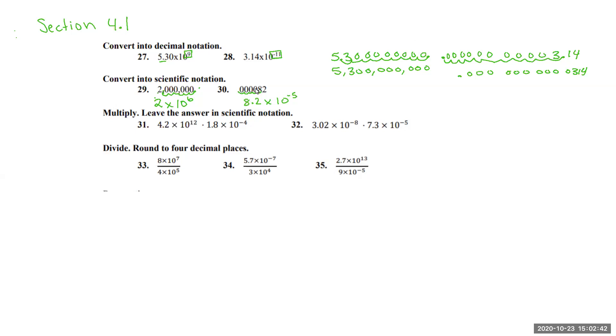To get from 8.2 to 0.00082, we have to move to the left 5. Thinking about this way makes it a little bit less confusing.